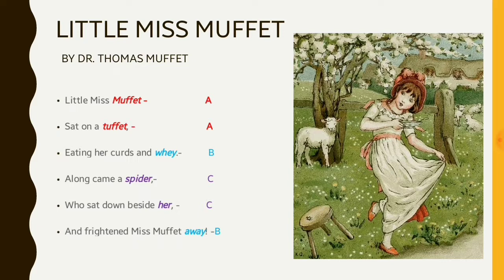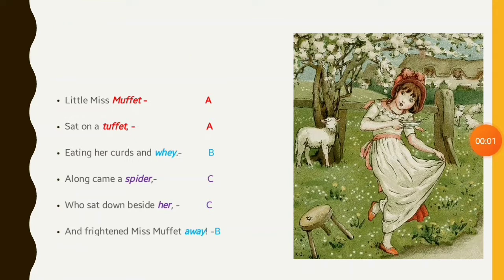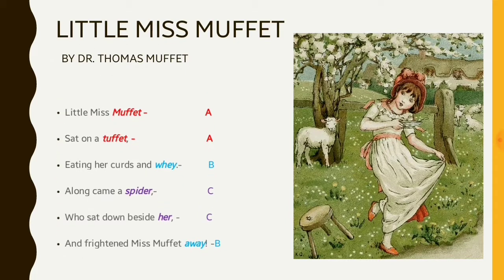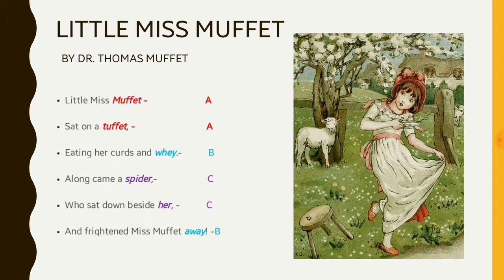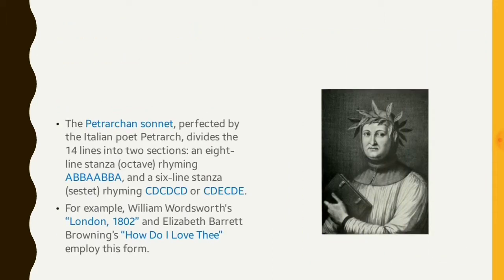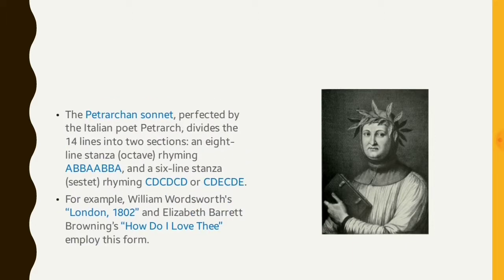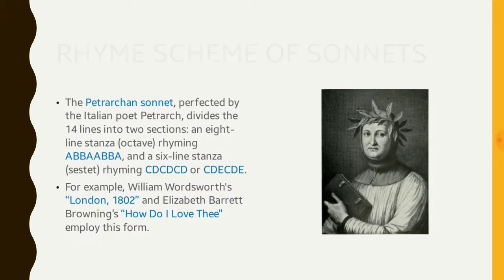So now the rhyme scheme that we get is AABCCB. So now we will discuss this method of determining the rhyme scheme by using the example of a sonnet. And for that purpose I have chosen a Petrarchan sonnet which is How Do I Love Thee written by Elizabeth Barrett Browning.